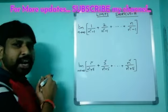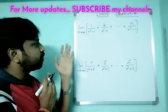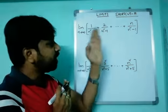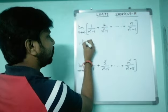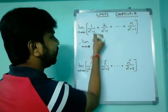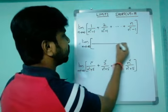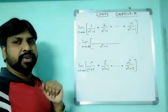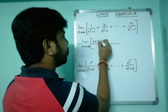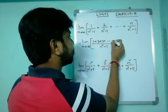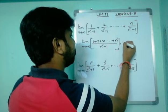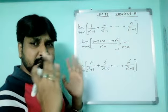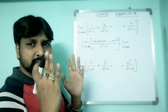Limit n tends to infinity: 1/(n²−1) + 2/(n²−1) + ... + n/(n²−1). If you observe, all the denominators are the same — n²−1. The numerators are 1 + 2 + 3 + ... + n, which is sigma n. As discussed in the previous session, sigma n equals n(n+1)/2.